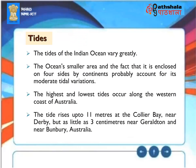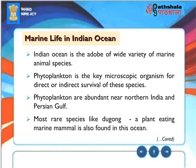Tides. The tides of the Indian Ocean vary greatly. The ocean's smaller area and the fact that it is enclosed on four sides by continents probably account for its moderate tidal variations. The highest and lowest tides occur along the western coast of Australia. The tide rises up to 11 meters at Collier Bay near Derby, but as little as three centimeters near Geraldton and near Bunbury, Australia.